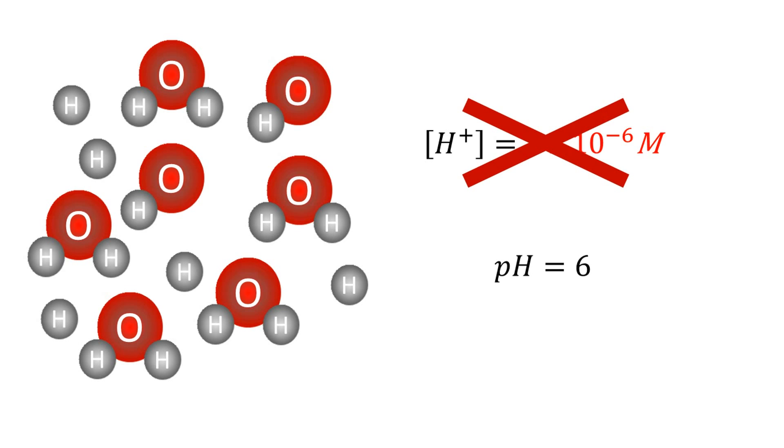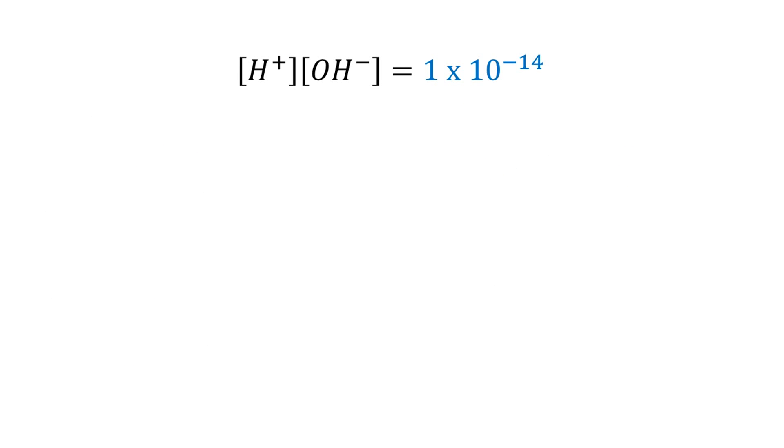Let's start with the equation of the ionic product of water. If we take the negative logarithm base 10 of both sides of the equation, we obtain the following expression. The first term is what we know as pH, that is, the negative logarithm of the H plus concentration.